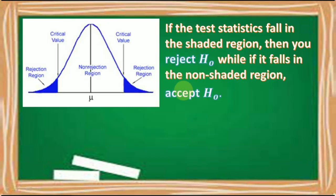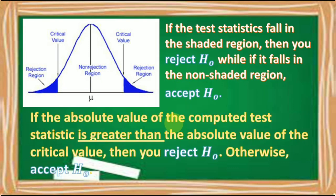If the test statistic falls in the shaded region, you reject the null hypothesis; if it falls in the non-shaded region, you accept the null hypothesis. Remember: if the absolute value of the computed test statistic is greater than the absolute value of the critical value, then you reject the null hypothesis; otherwise, accept the null hypothesis.